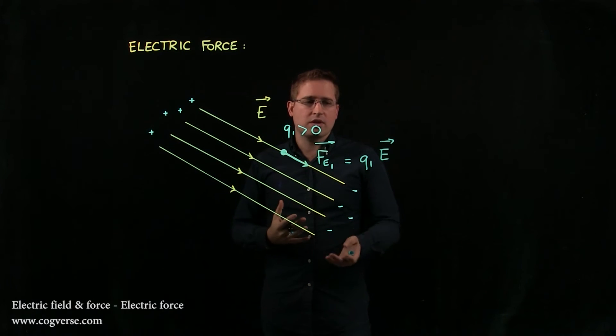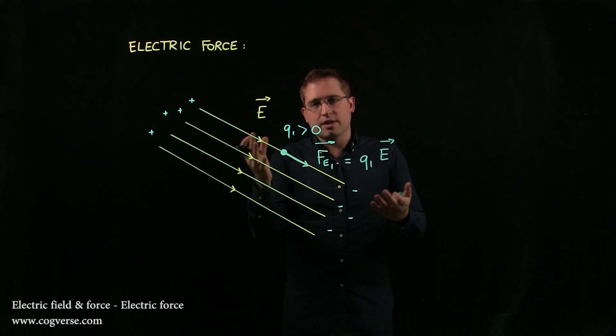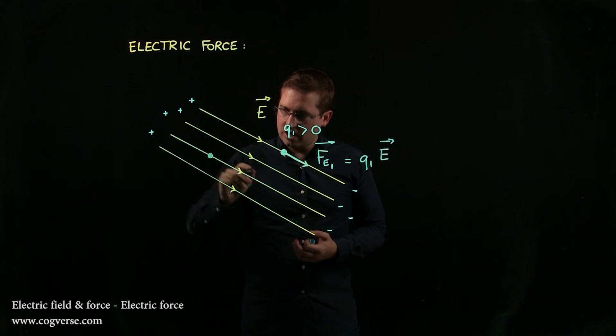So the electric force is Q times the electric field. Now, Q1 is a positive charge. Let's take a look at a negative charge. Say we put a negative charge right here.